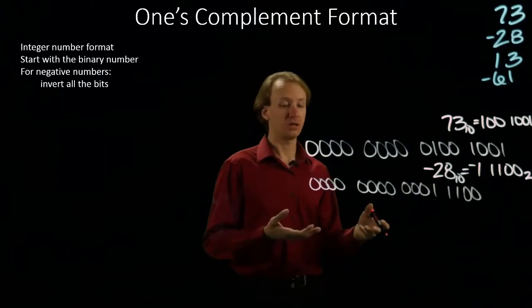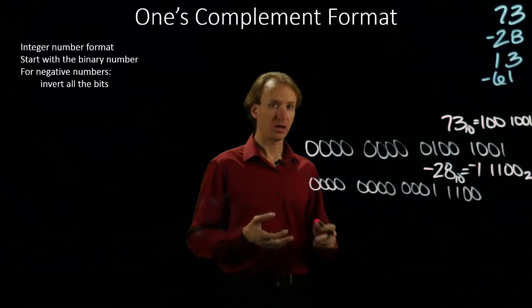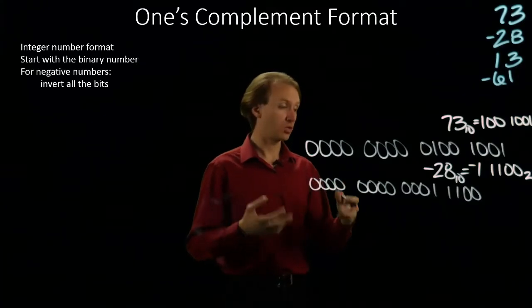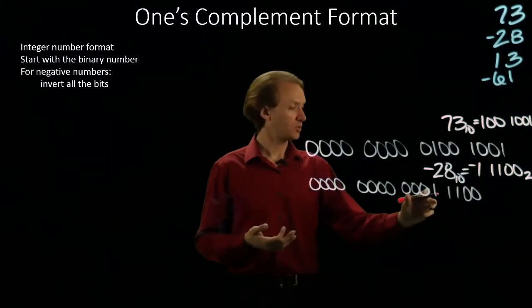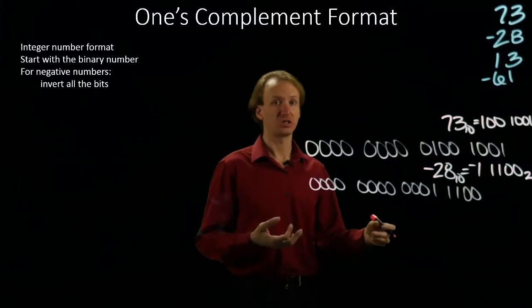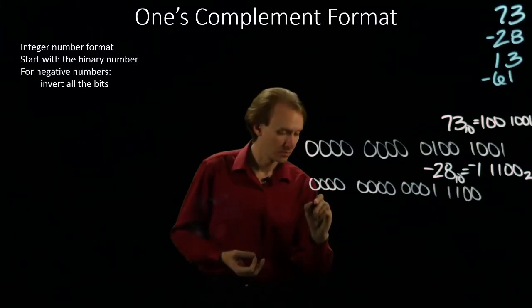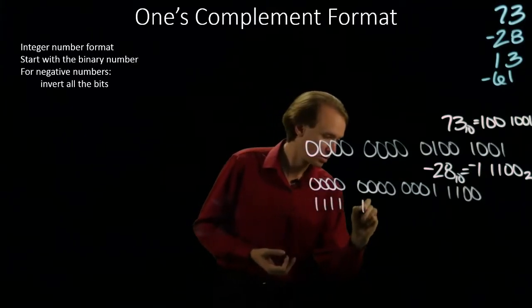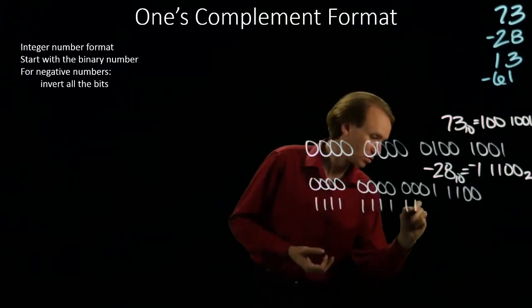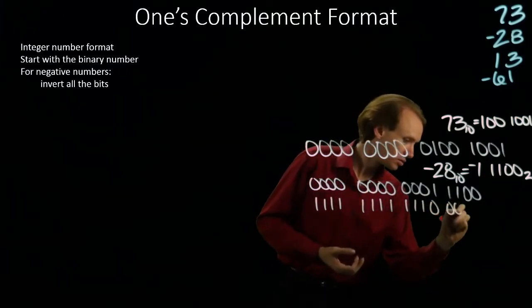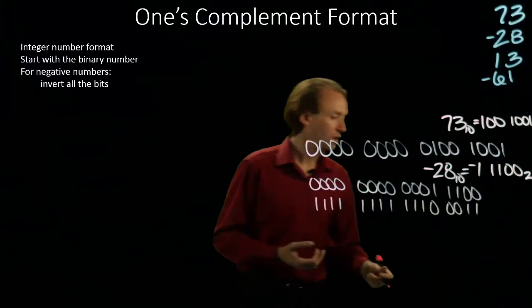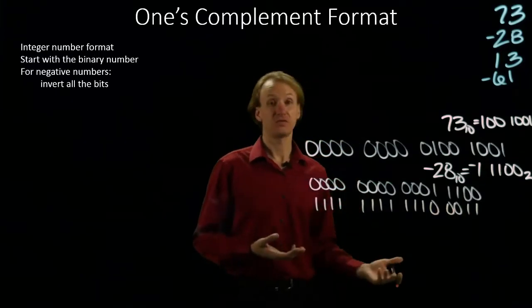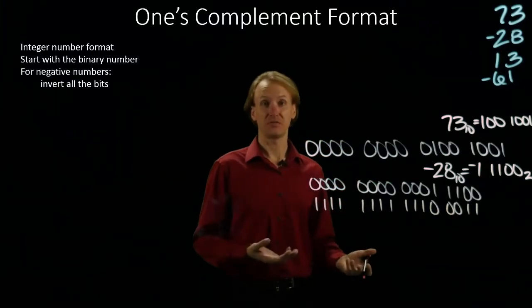But in this case, I want negative 28. So, I'm going to go through, and everywhere I see a 0, I'm going to change it to a 1. And everywhere I see a 1, I'm going to change it to a 0. So, this is negative 28 in the one's complement format.